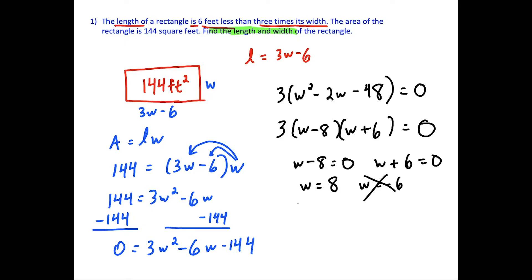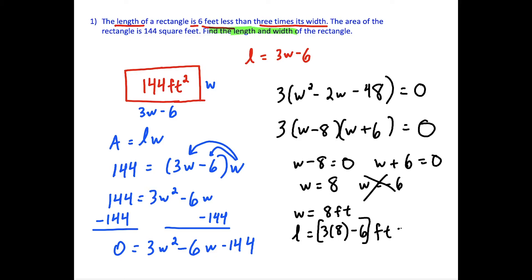The width of our rectangle is 8 feet. The length, as defined, is 3 times W minus 6, so 3 times 8 minus 6 equals 24 minus 6, which is 18. So the length is 18 feet. This is our solution.